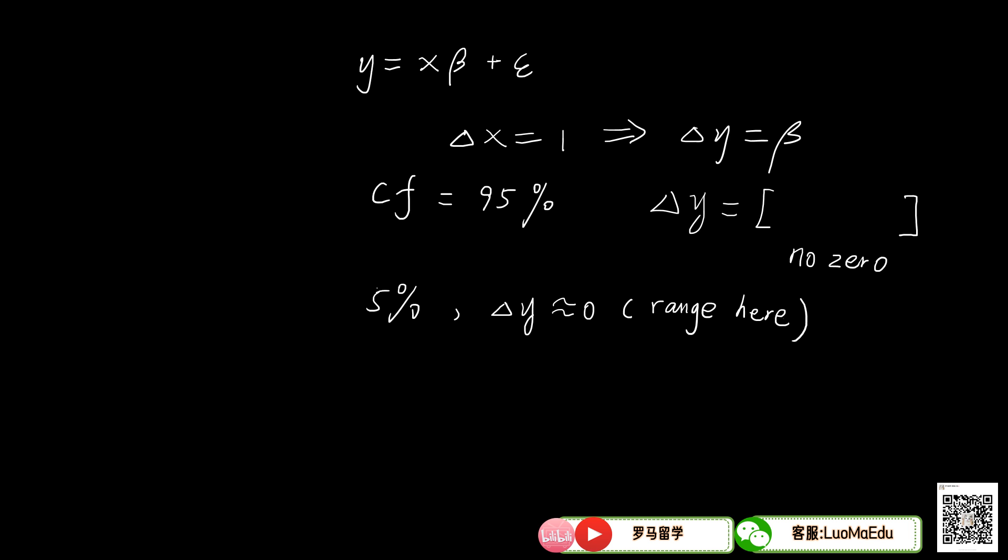And a given confidence interval, let's say 95%, means that if we sample 100 times, in 95% of the total 100 samples, the y will change within a range and this range does not contain zero.